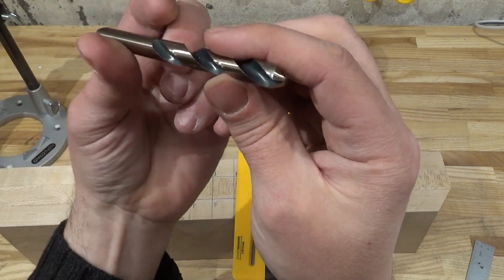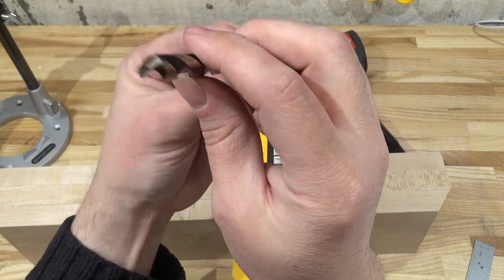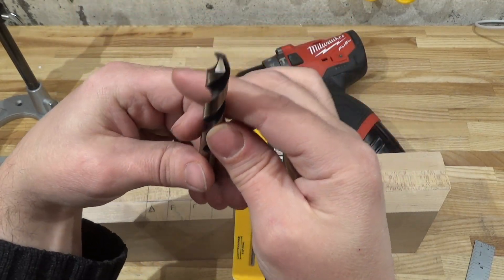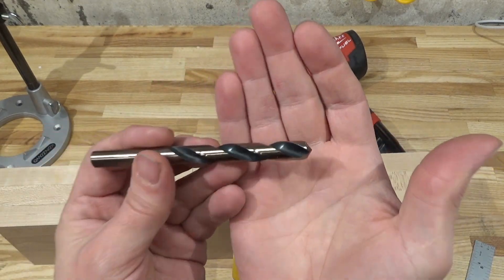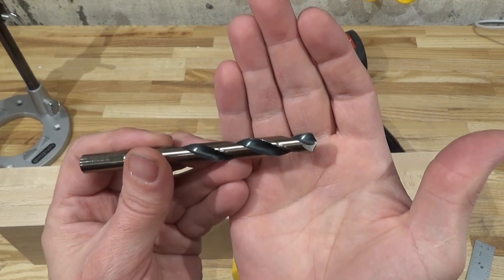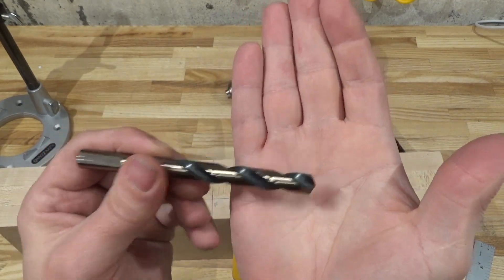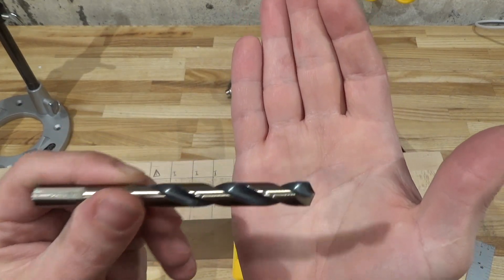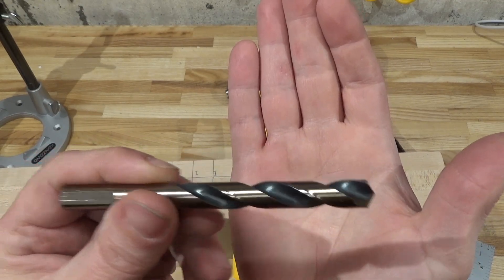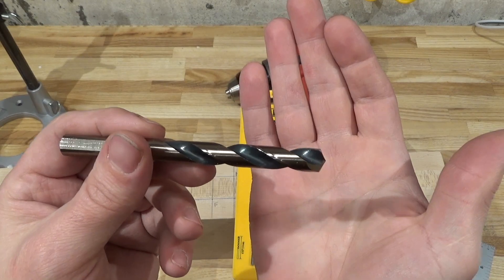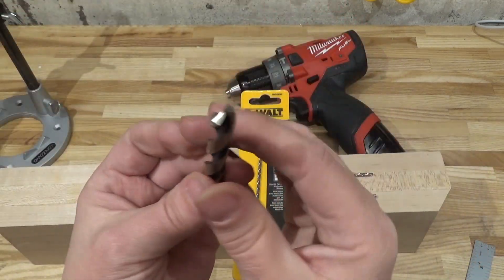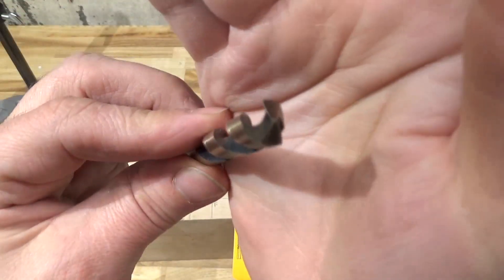Which will be a Norseman twist bit. I will be using a three-eighths mechanic's length, and this is really a poor choice for drilling into wood because this bit is 135 degrees. Even on metal, if you're not using a proper little crater caused by a center punch, this thing will just walk all over the place.